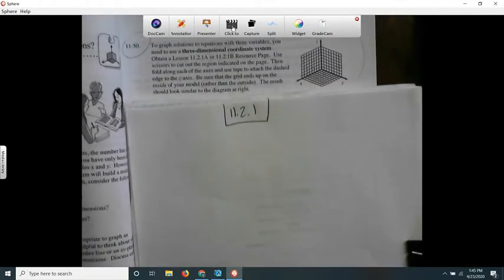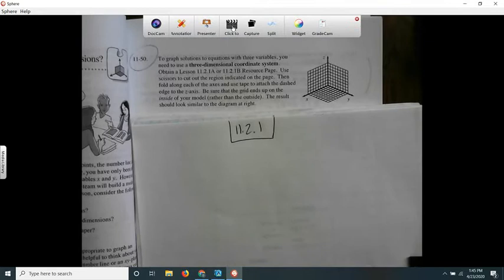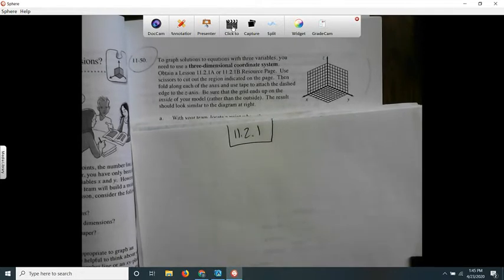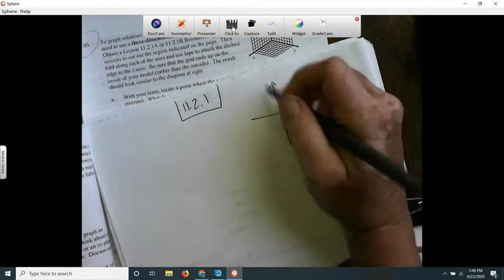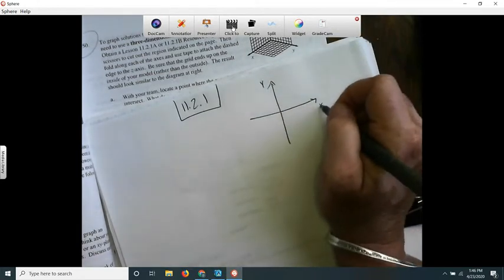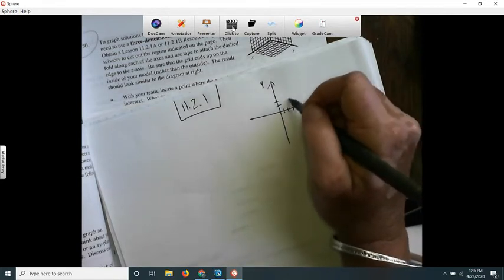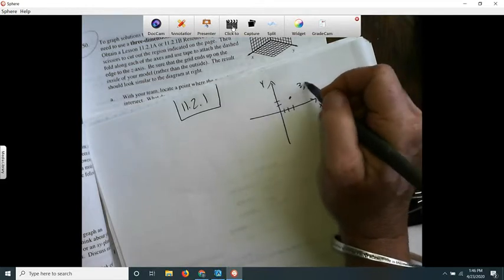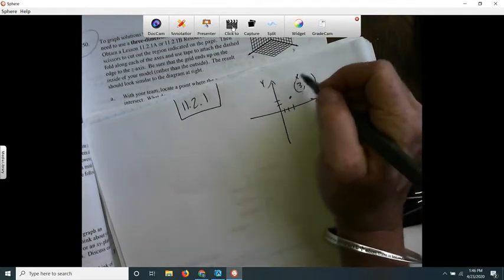We're going to do just these first three problems. So 11-50 says: To graph solutions to equations with three variables, you need to use a three-dimensional coordinate system. So it just says to get one and make it. You guys are used to doing it like this, that the vertical axis is always Y, and this is always X, and you get these ordered pairs. And you write them as 3 comma 2 or whatever. We know they're ordered pairs. So this is always X and this is Y.